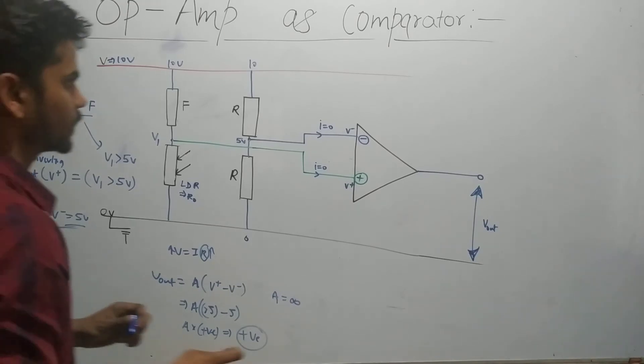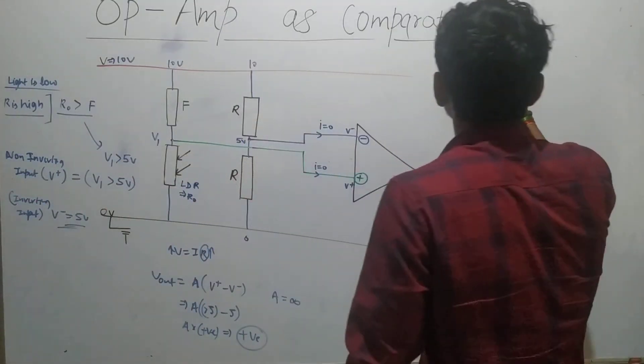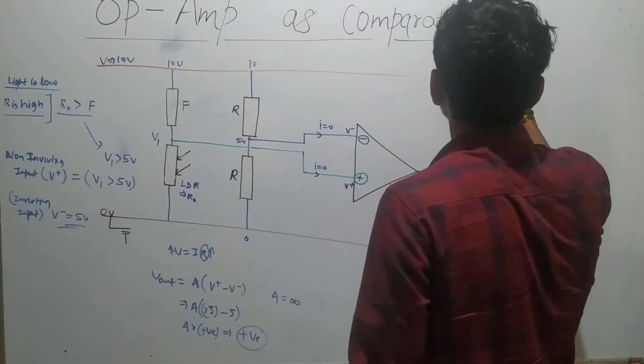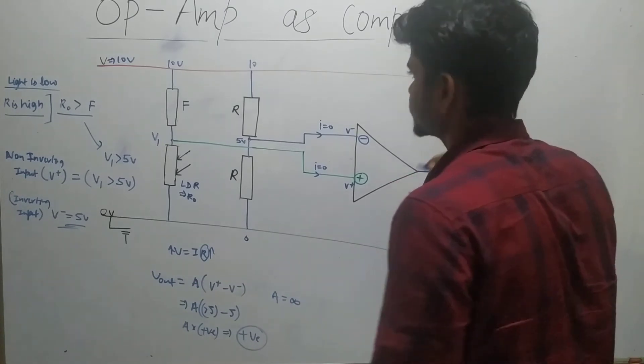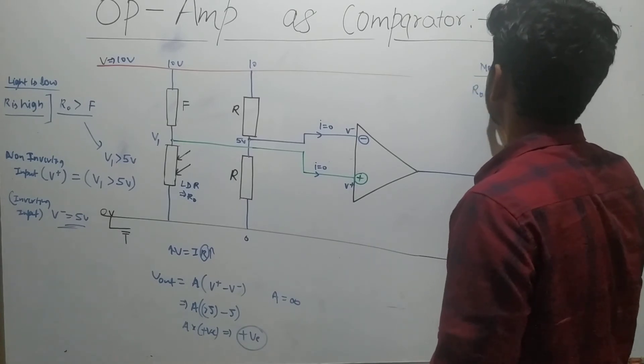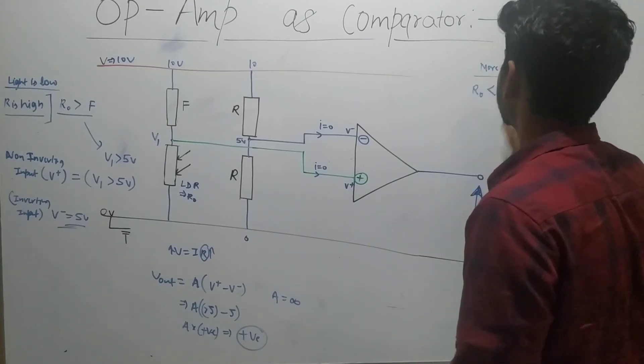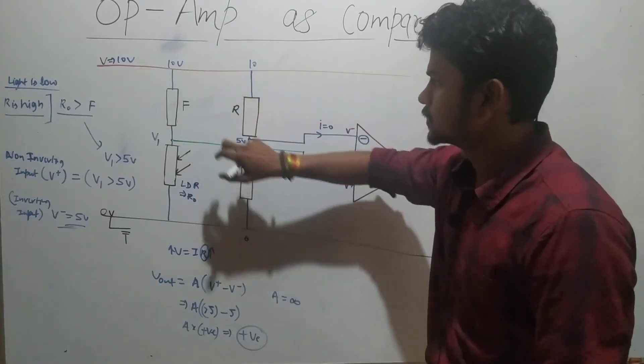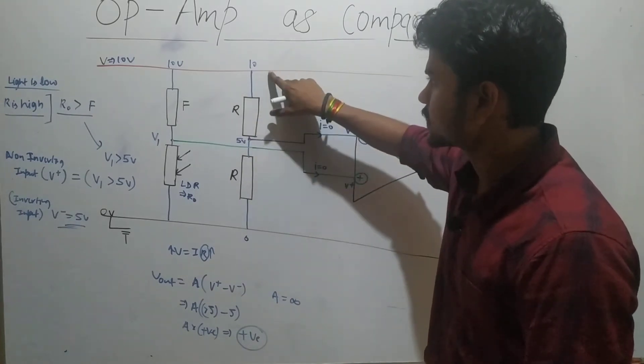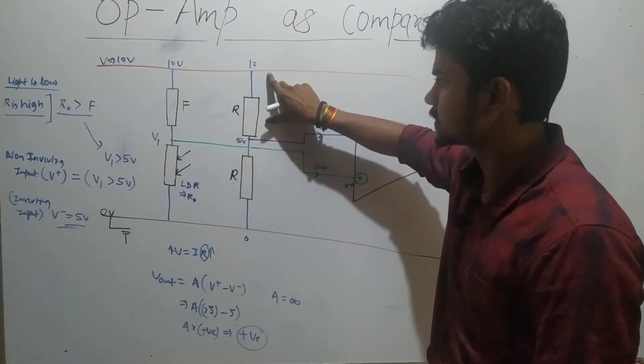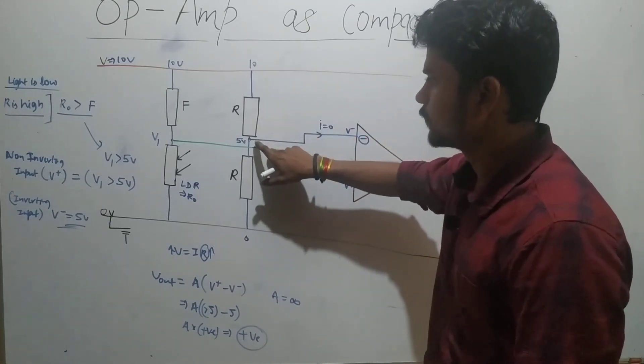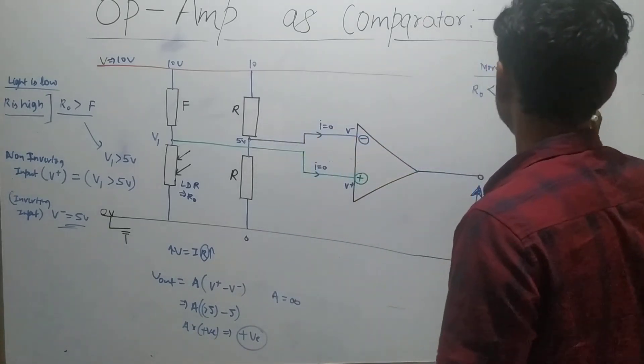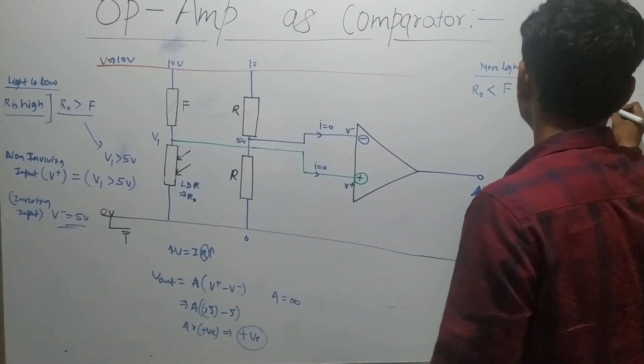Now let's see what happens in the other case. This time we provide more light. More light means the LDR resistance will get lower, let's say it becomes lower than R_F. This case will still be the same because we're not changing anything. The resistances are equal, so 5 volts will be across that. V- is also 5 volts.